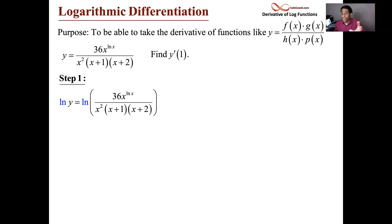It's one single log, and we're going to break it into multiple logs. So, we'll have the natural log of 36 plus the natural log of x to the log x minus the natural log of x squared minus the natural log of x plus 1 minus the natural log of x plus 2. Those are the guys there. The minuses end up on the bottom. And us breaking this up into simpler parts makes it easier to take its derivative.